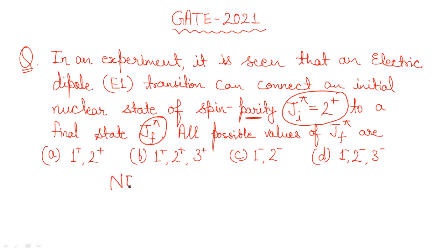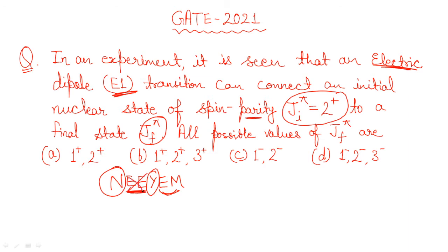As per the trick, we apply the following rule: if there is no parity change, we consider even electric multipole components; if there is a parity change, we consider even magnetic components. The electric component given here is odd — it is E1. Since it is not an even electric multipole, a parity change will take place. So if the initial parity is positive, the final state parity will be negative. This tells us about the parity of the final state.